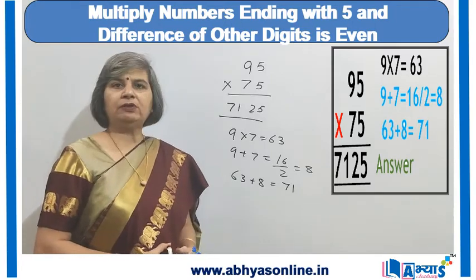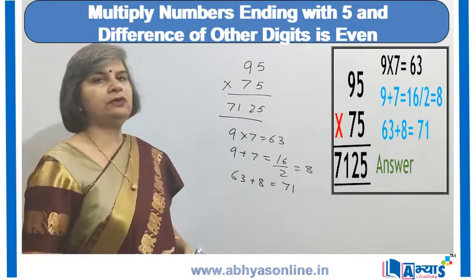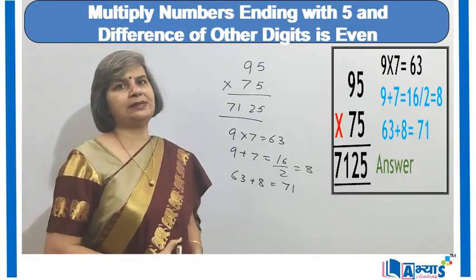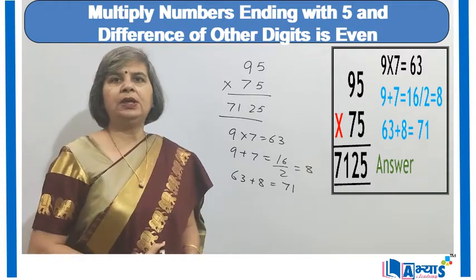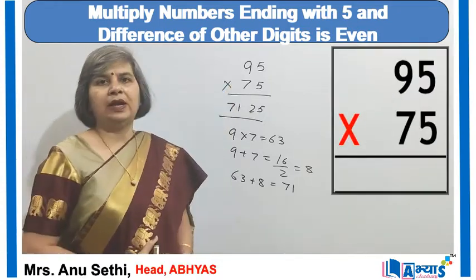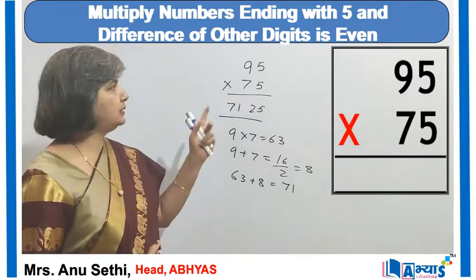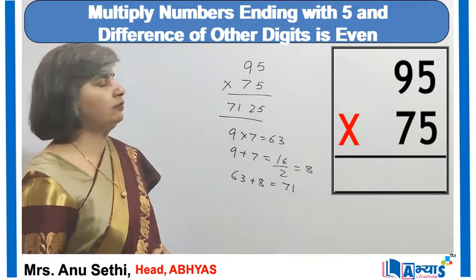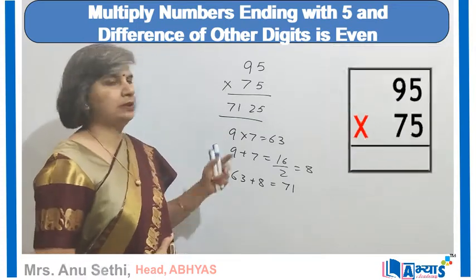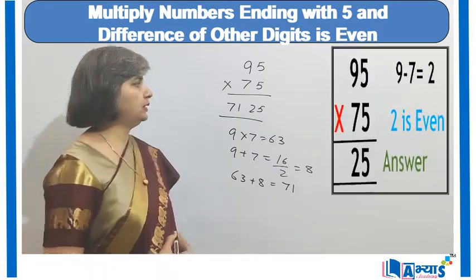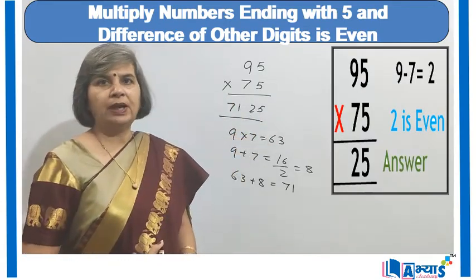So this is a very fast way of performing calculations — multiplying two numbers ending with 5 when the difference of the other digits is even. In the example of 95 and 75, 9 is the other digit of the first number and 7 is the other digit of the second number. Their difference is 2, which is even, so we prefix 25 in the answer.